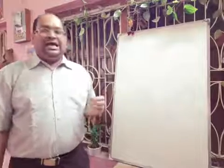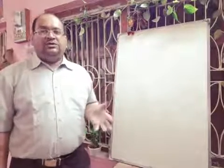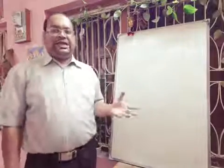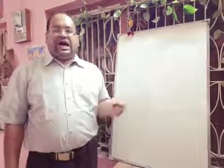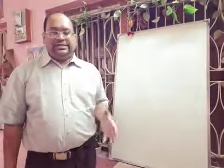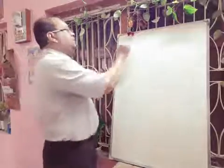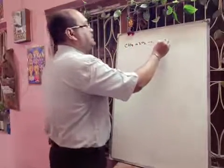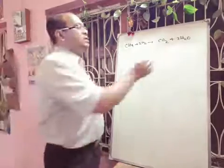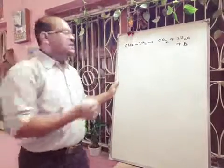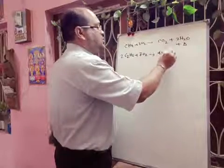Next we will discuss the combustion reaction. Alkanes readily burn with a non-luminous flame in excess air or oxygen to form carbon dioxide and water with evolution of a large quantity of heat. That is why alkanes are very good fuels. Propane, butane, and methane are all used as fuels. Propane and butane mixtures are sold as liquefied petroleum gas, LPG — what we use in our kitchen cylinders. Methane reacts with oxygen forming CO2 plus water; ethane similarly reacts with oxygen forming CO2 and water. These are exothermic reactions.